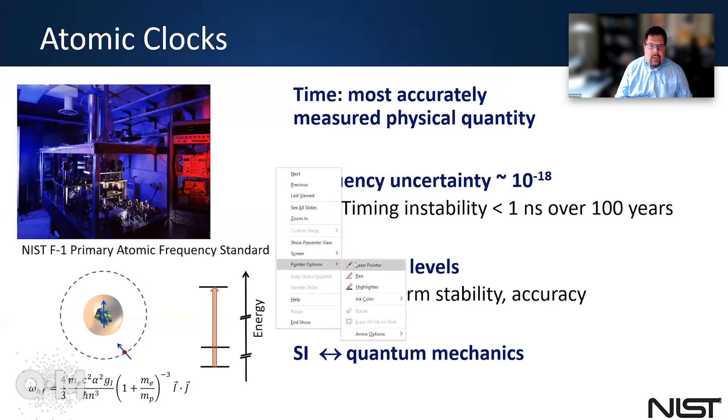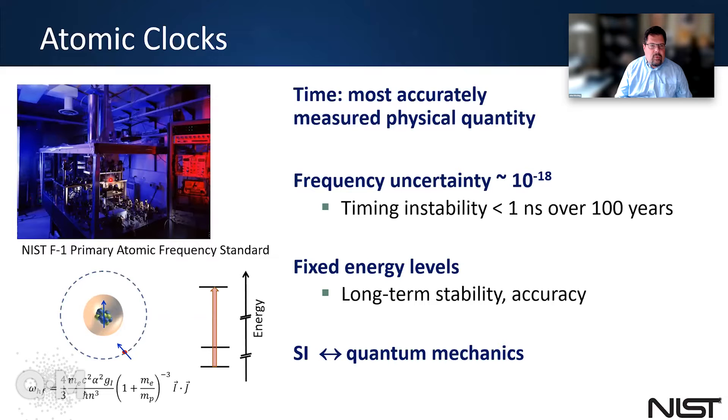So this up here in the left-hand corner is a picture of the NIST-F1 primary atomic frequency standard. And this was, in its time, one of the most accurate clocks in the world. As you may know, time is the most accurately measured physical quantity.